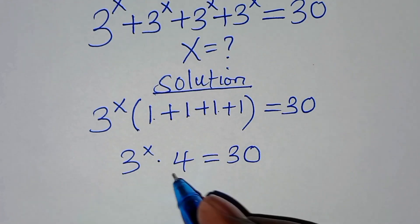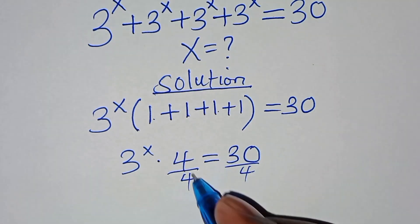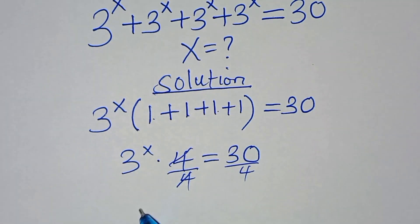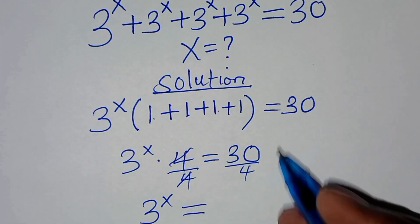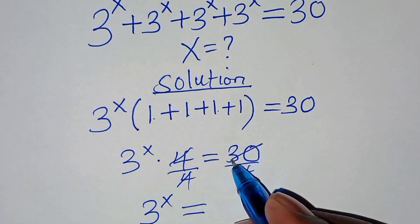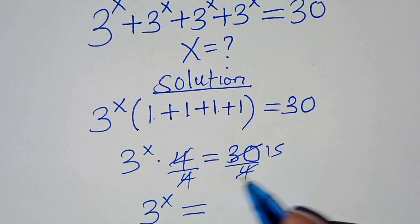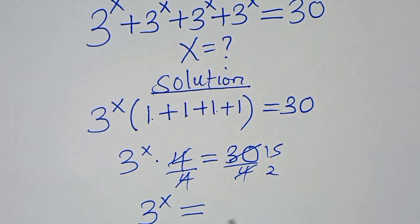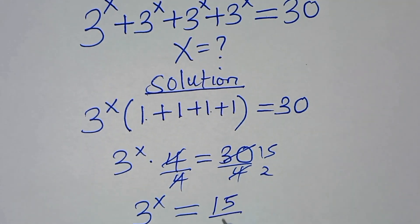Now let's divide both sides by 4, so that now here we have 3 to the power x. This is equal to — if we simplify here — by 2 this is 15, by 2 this is 2, so we have 15 over 2.